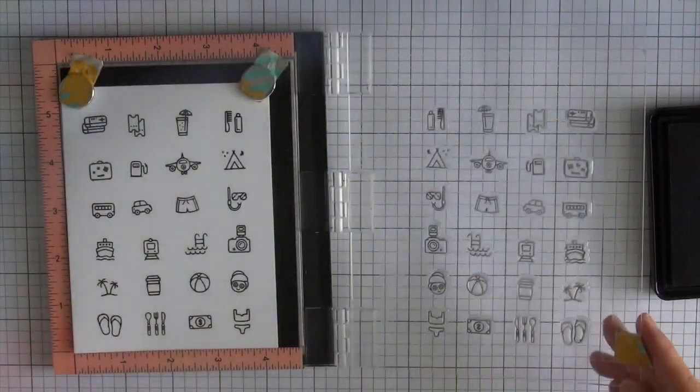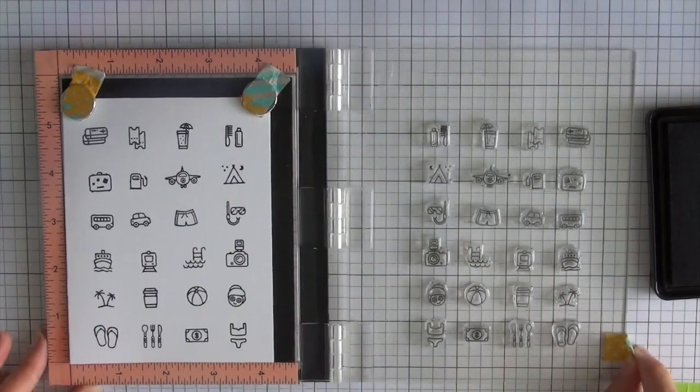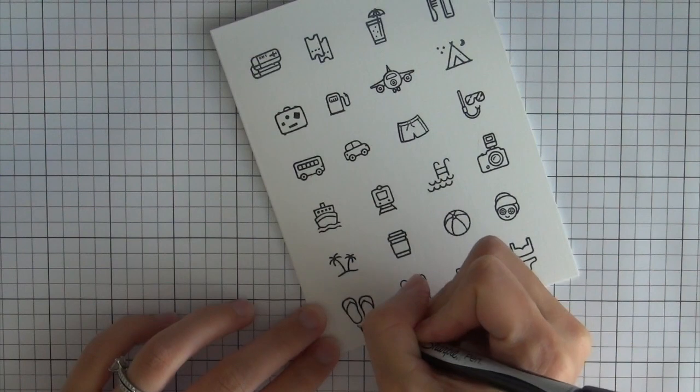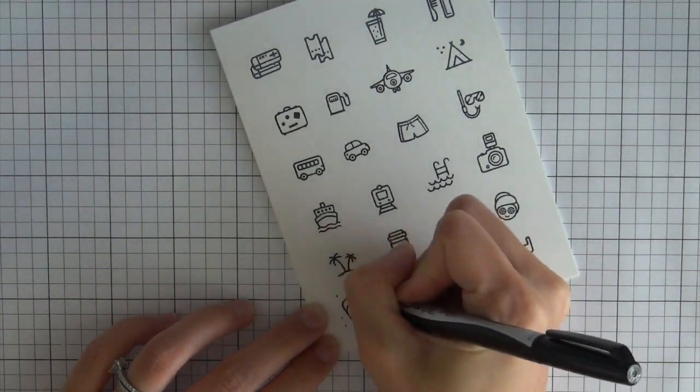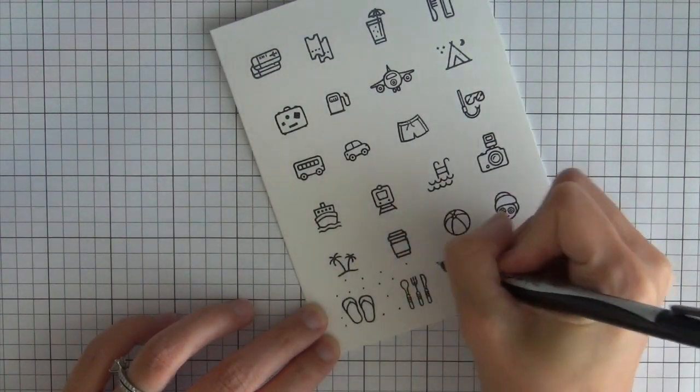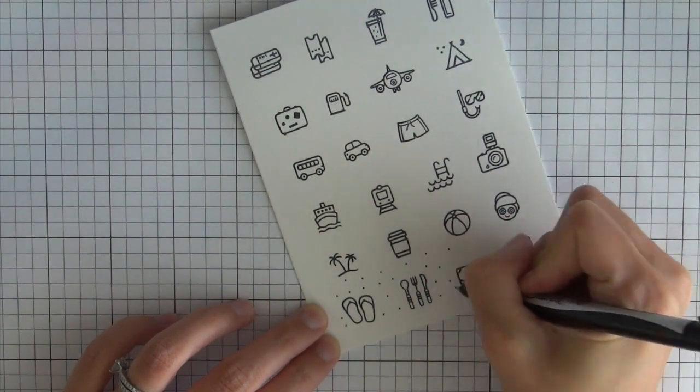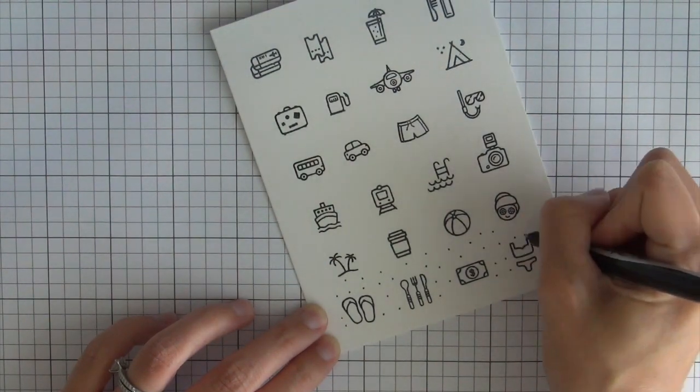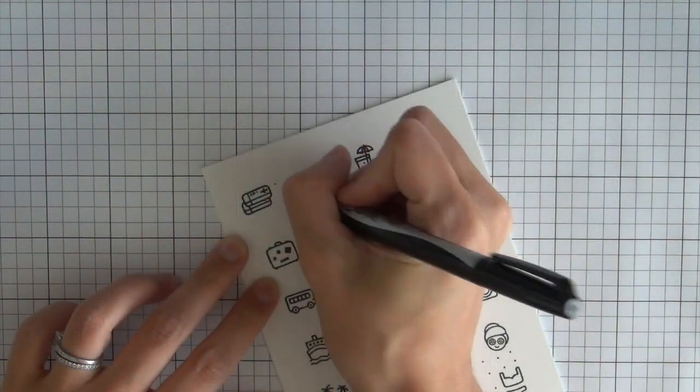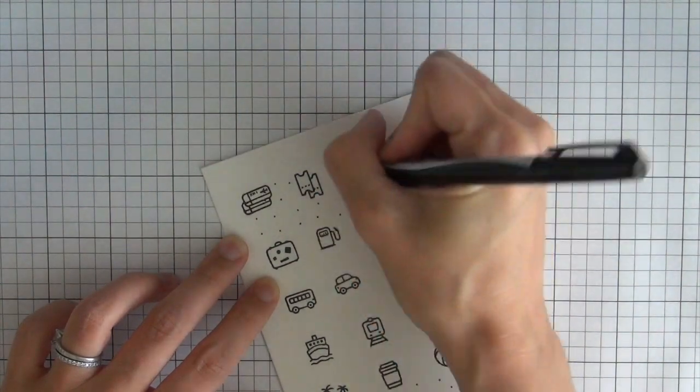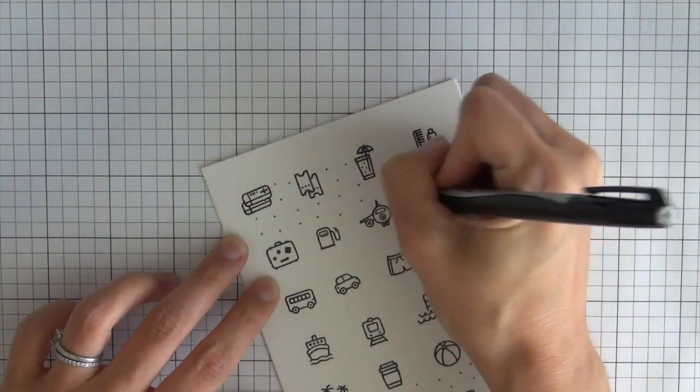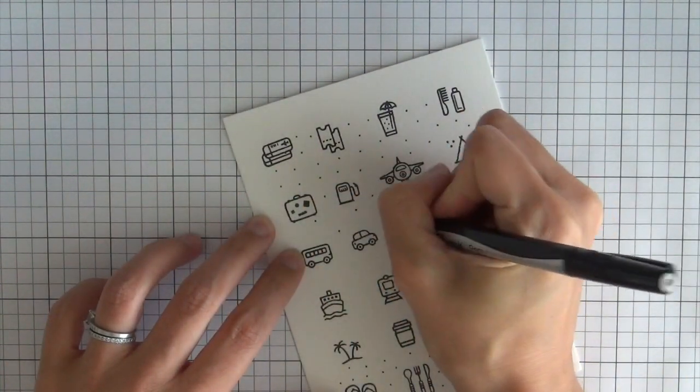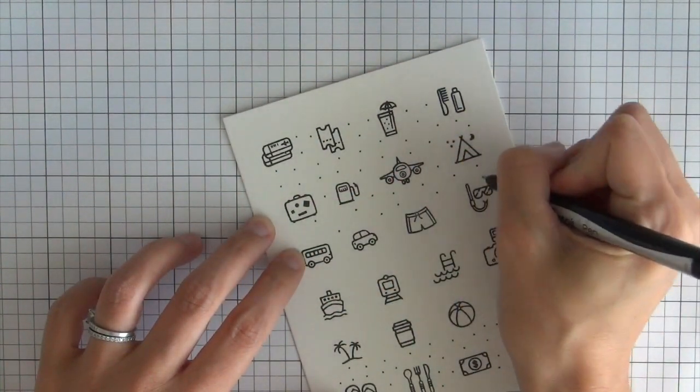Once I get that all stamped out, I'm going to start working on the background of the card. I thought to add a little bit of extra interest and texture, I'm adding some black dots to the whole card, but I'm concentrating the dots at the bottom and the top, and then having them get a little bit less together as they get to the middle of the card. I think it brings all the images together, makes the background more cohesive, and adds a little bit of interest.